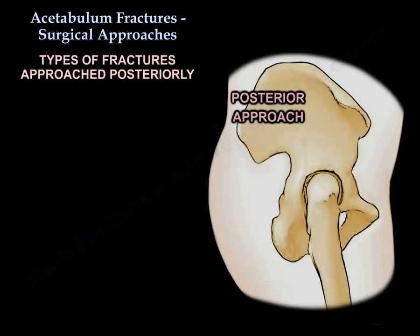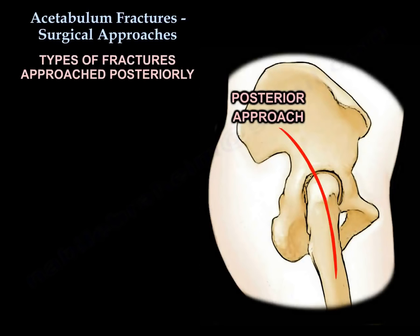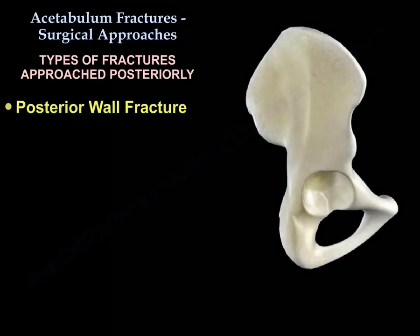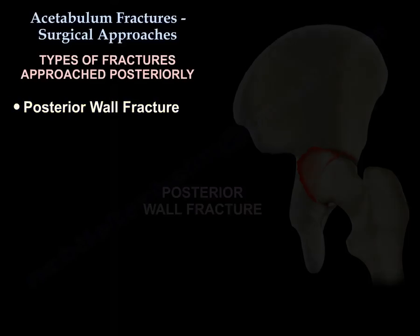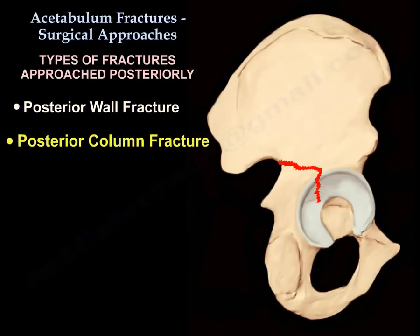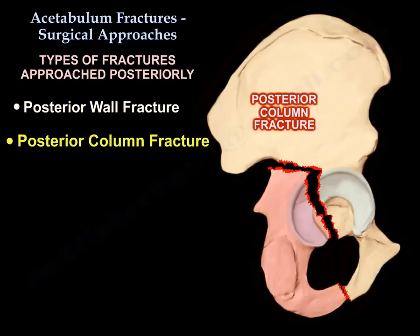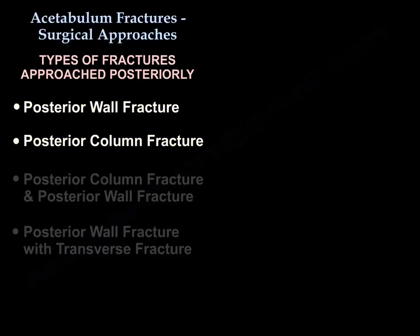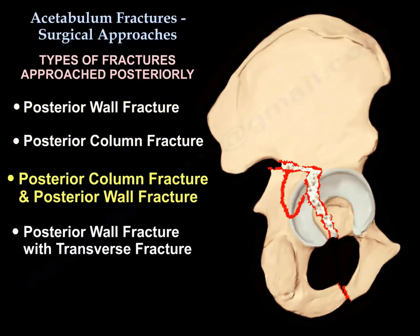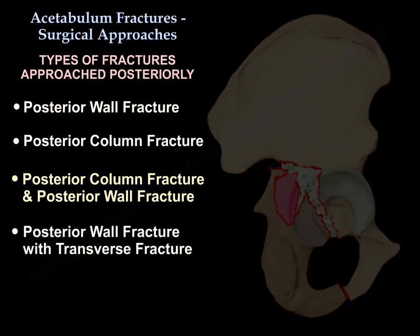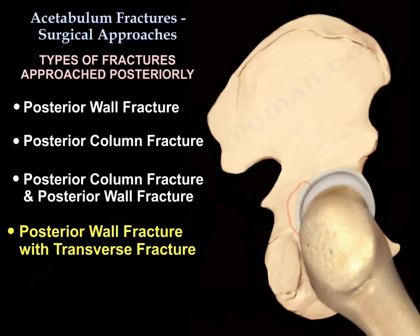What are the types of fractures approached posteriorly? A posterior wall fracture, a posterior column fracture, a posterior column and posterior wall fracture, and a posterior wall fracture with transverse fracture.